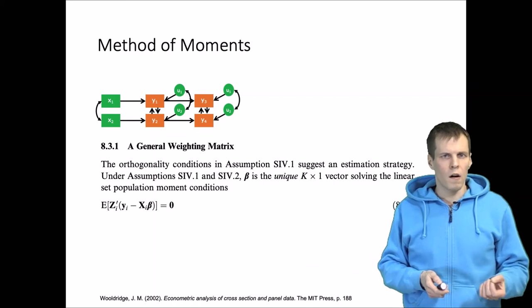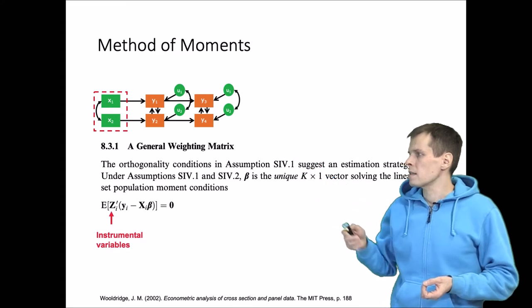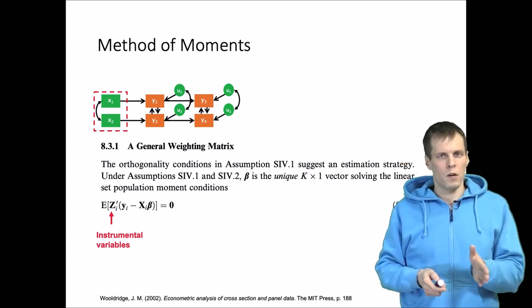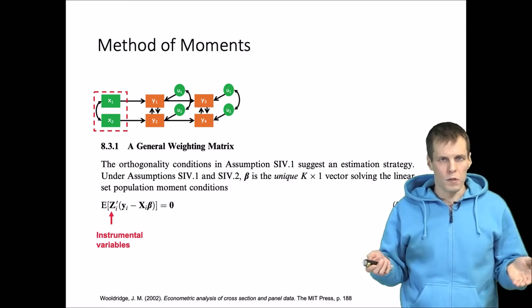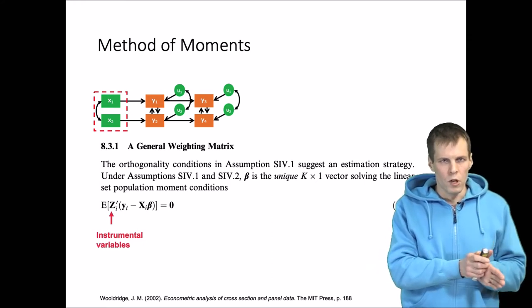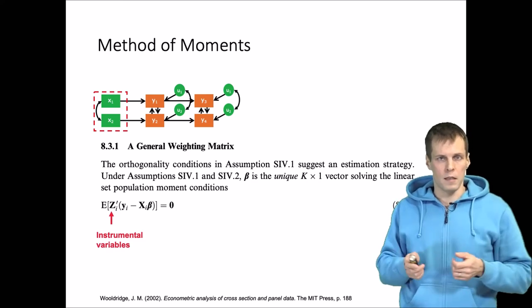z are the instrumental variables in our system model. The instruments are the x's, and then y minus x beta is simply the error term. We have the actual observed value minus the fitted value in the population, and the difference is the error term.